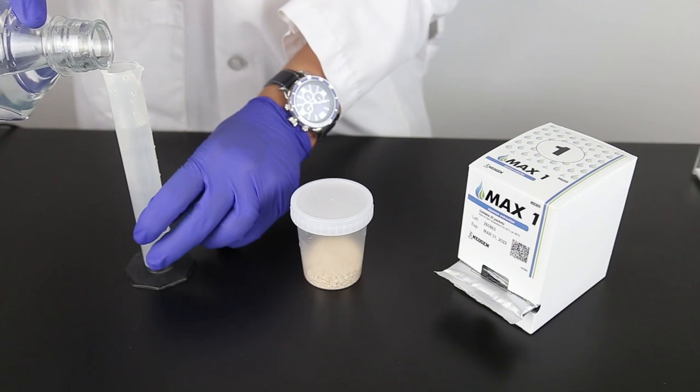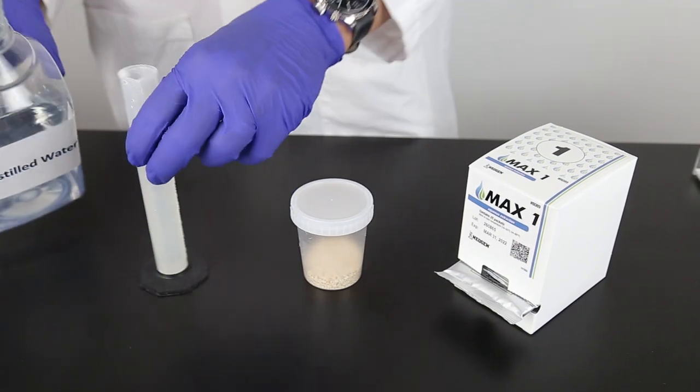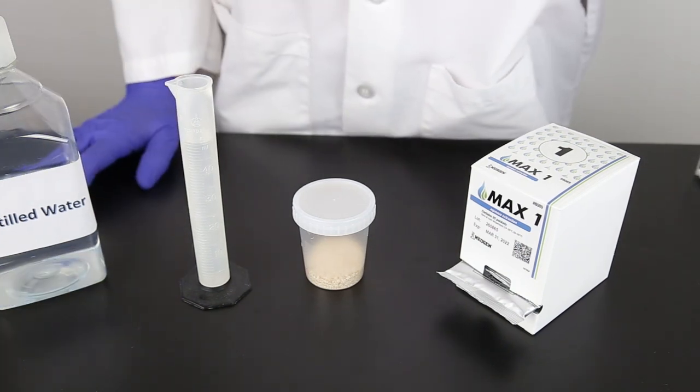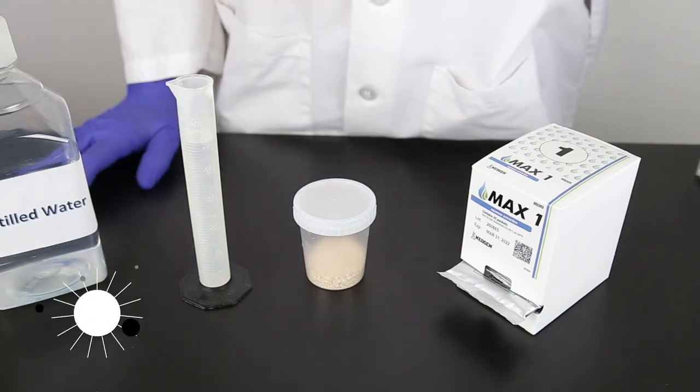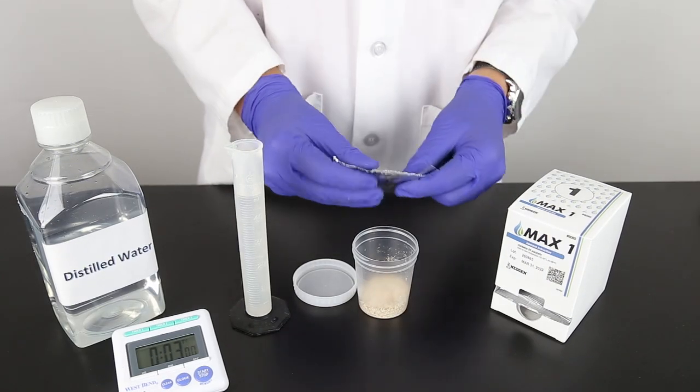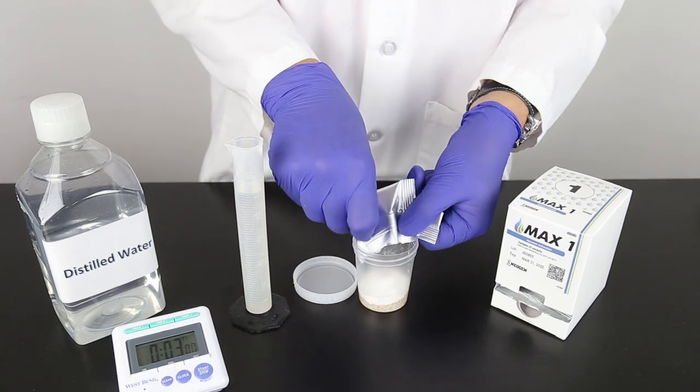The sample is extracted with a ratio of one part sample to five parts of distilled or deionized water. For this example, we're using 10 grams of ground sample with 50 milliliters of distilled water. Each sample uses one MAX-1 aqueous extraction packet.